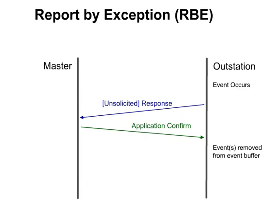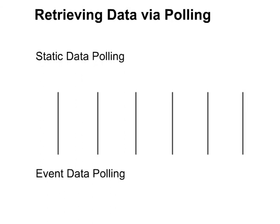Let's take a look at the difference between static data polling and event data polling using a digital input as an example. The master polls at a specified interval, indicated by vertical black lines. At the start, the input is low. The input then transitions to a high state. Whether the master polls for static data or event data, the device will report the high state on the next poll. However, with DNP event data, the outstation could also report the time of the transition. Next, the input transitions low and then high again. With static polling, this transition is missed as the device reports the current state on the next poll. With event polling, however, the device reports both transitions.